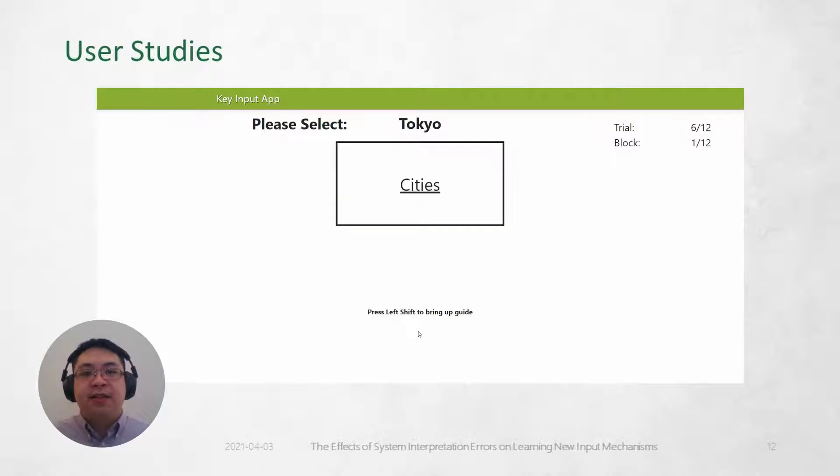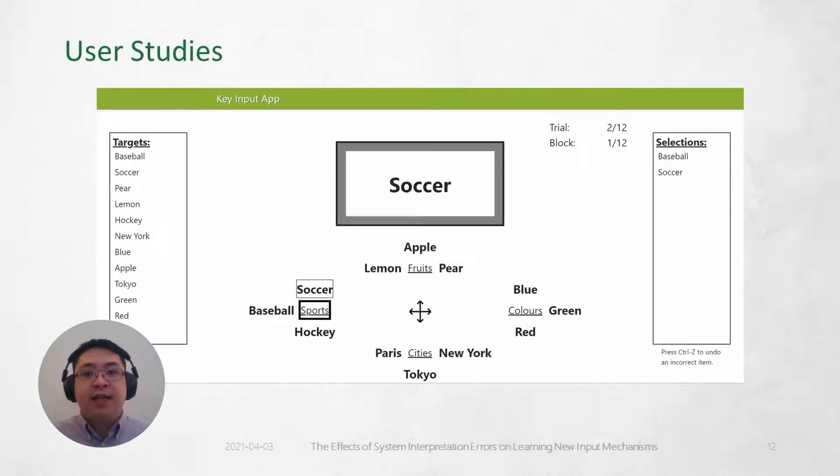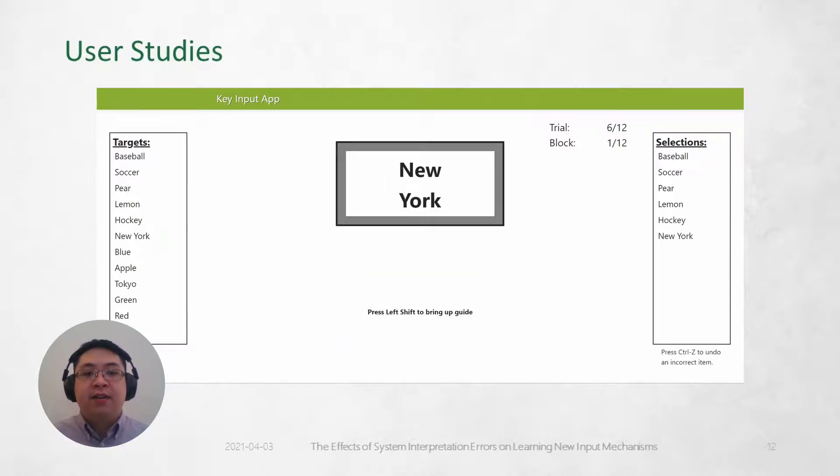Participants completed three sets of trials consisting of training blocks that gave access to the visual guide and unlimited attempts to complete tasks, followed by a memory test that had no guide and only allowed one attempt. To track user learning and performance, we measured their completion time of the tasks, the rate of selection errors caused by the user themselves in the training blocks, and the accuracy of correct selections during the memory recall tests.